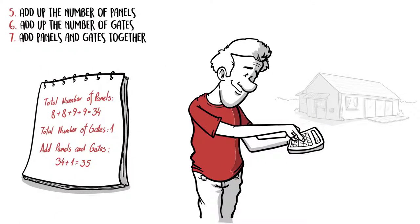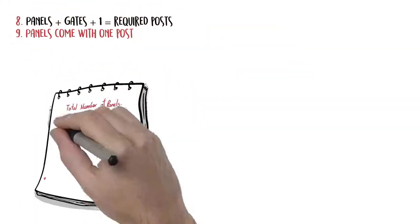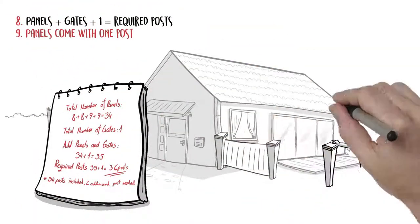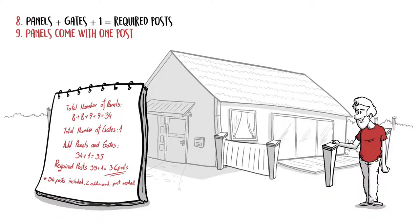Add the total panels to the total number of gates. You typically need one more post than panels and gates. Panels come with one post, because they're designed to be attached to each other.